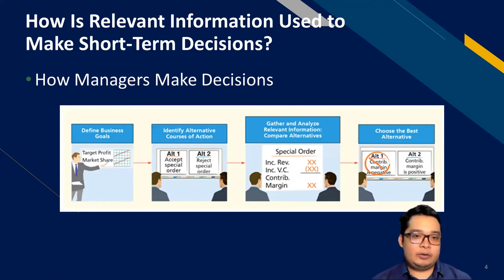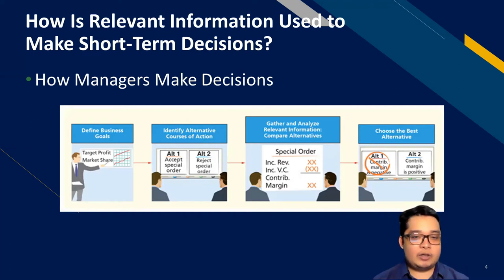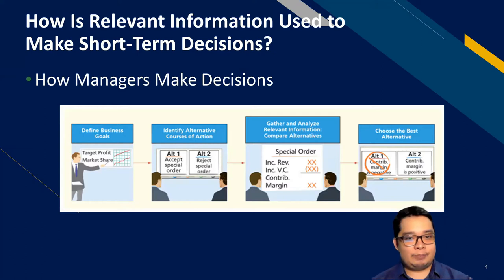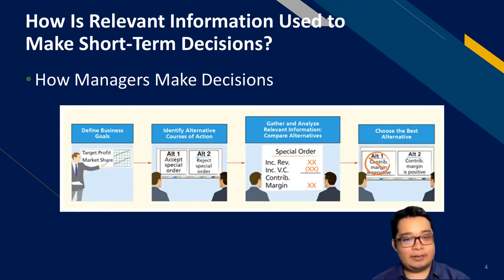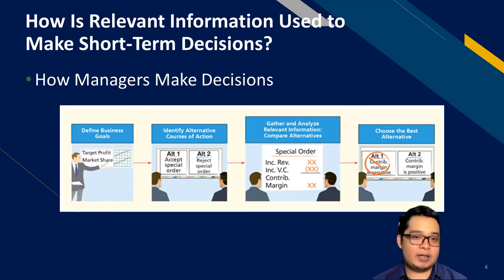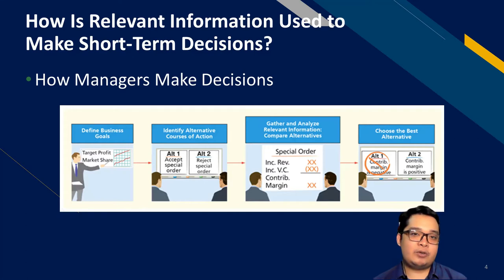The first thing you need to do is define your business goals — what you want to achieve. By defining that business goal, you identify different ways of achieving it, identifying different alternative courses of action. There are many ways to achieve the same business goal. If your goal is to maximize profit, there are many ways to do so, but you don't have enough resources to pursue all of them. So you must identify the alternative courses of action and evaluate each one given your constraints.